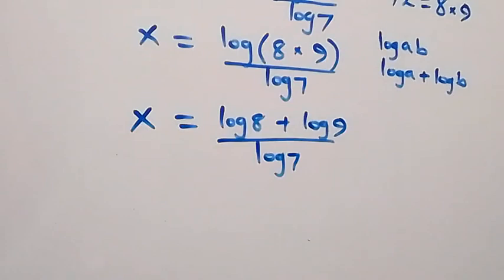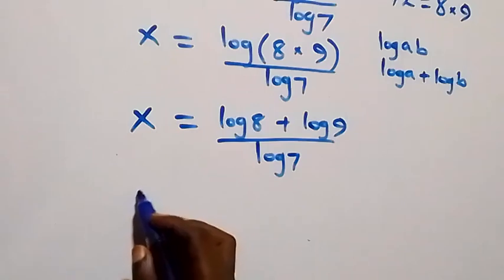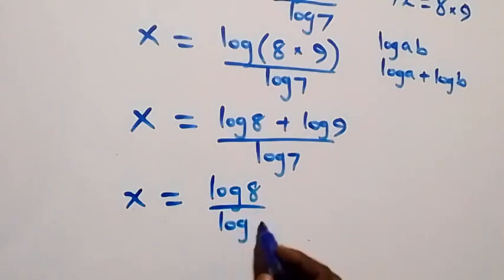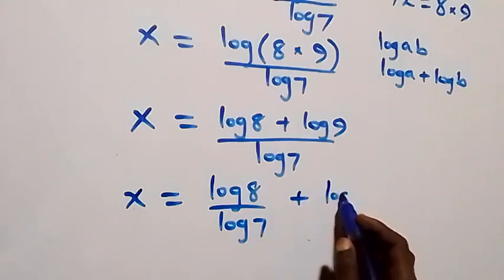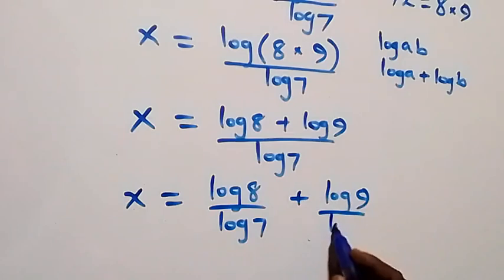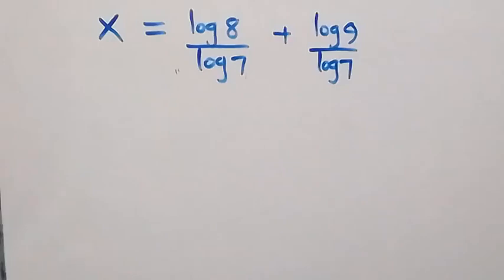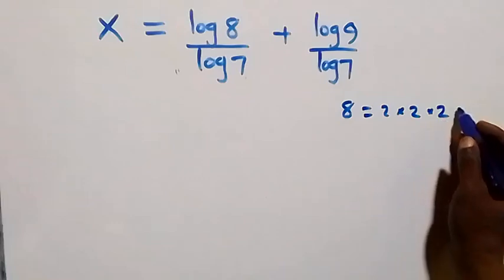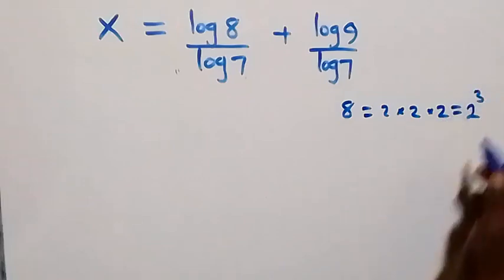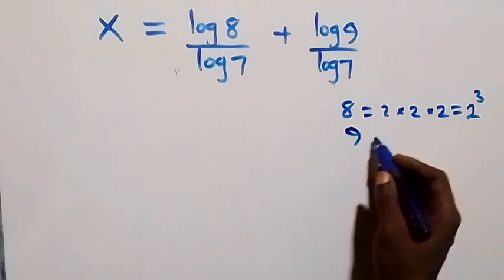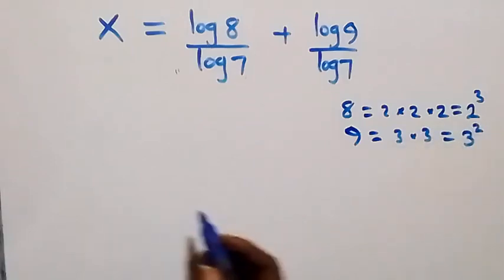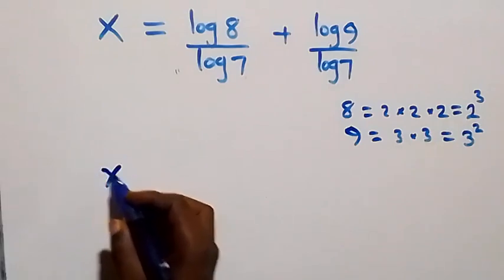This can be split as x equals to log 8 over log 7 plus log 9 over log 7. We can simplify further by writing 8 as 2 times 2 times 2, which is 2 raised to power 3, and 9 as 3 times 3, which is 3 squared.